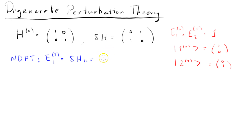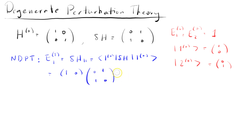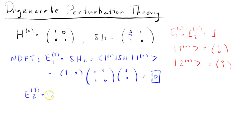Computing this, it's ⟨1,0| δH |1,0⟩, which gives us [1, 0] times [0, 1; 1, 0] times [1, 0]. The first matrix multiplication gives [0, 1], and the inner product gives 0. Another way to see this is that the matrix element δH_11 is just the first row, first column entry of δH, which is 0. Similarly, the first order correction to the second energy, δH_22, is also 0 by the same argument. So our first order energy corrections are 0.